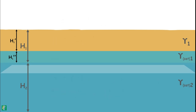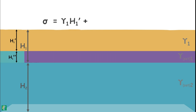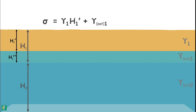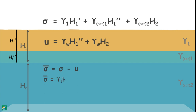At the bottom of the second layer, total stress is gamma_1·H1' plus gamma_sat1·H1'' plus gamma_sat2·H2. Pore water pressure is gamma_w multiplied by H1'' plus H2. Hence, effective stress can be simply calculated, and part of the equation can also be written as the submerged unit weight of the respective soil layers.